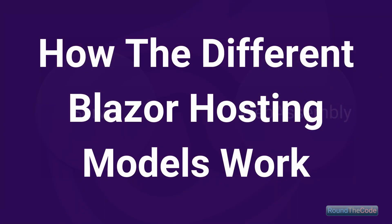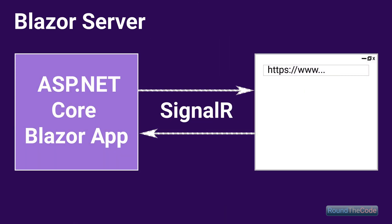It's good to have an understanding of how the Blazor hosting models work before looking at the differences. Blazor Server uses a standard ASP.NET Core application. Within that application, we can integrate server-side functionality, such as integrating a SQL Server database through Entity Framework. We can also create client-side pages using Razor components or Razor pages. When the application is running, the browser sets up a constant connection with the Blazor Server application using SignalR — this is how the browser communicates with it.